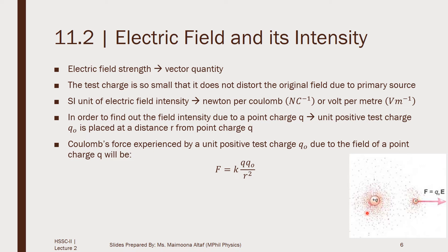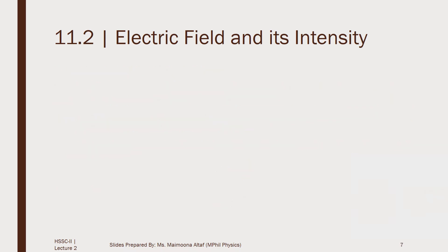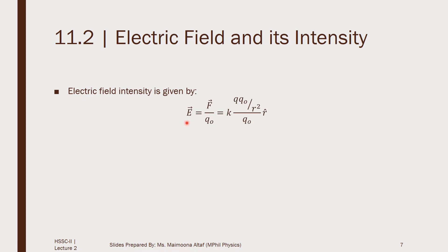In vector form, the force will be given as F = kQQ₀/R² times the unit vector R̂. The direction of electric field and the electric force will be the same. So we can define the electric field intensity as E = F/Q₀, where F is the Coulomb force kQQ₀/R² divided by Q₀ times the unit vector R̂. This gives us the electric field intensity as E = kQ/R² times the unit vector R̂.